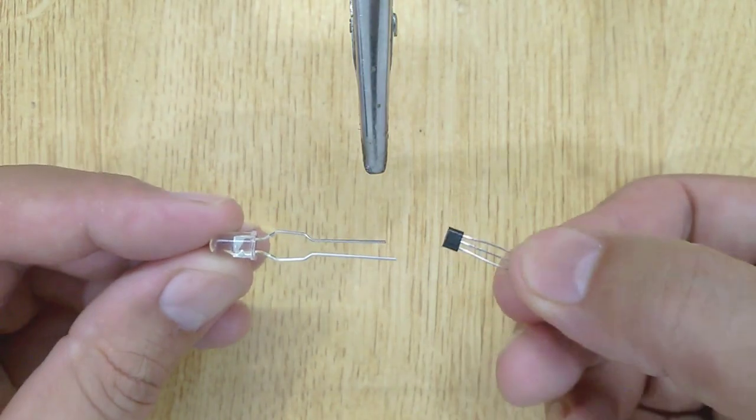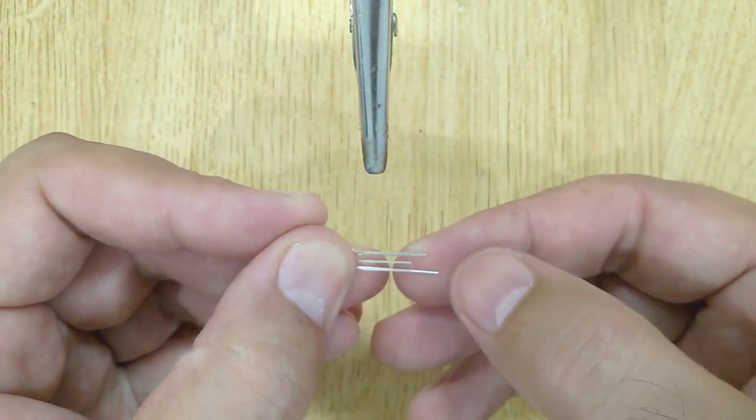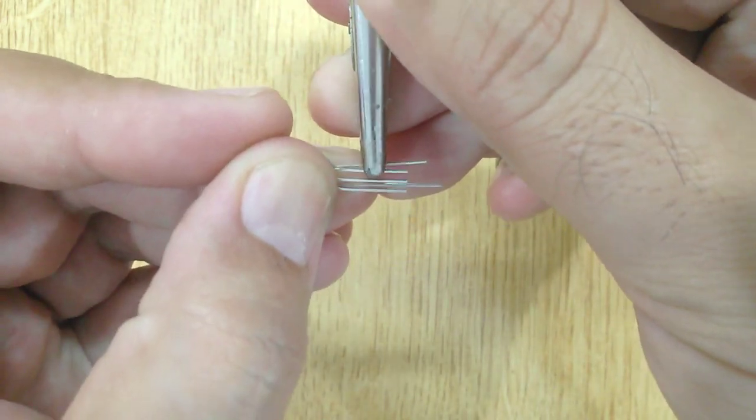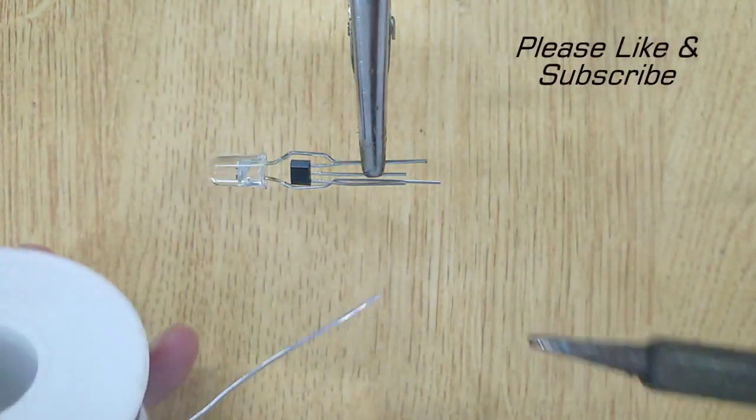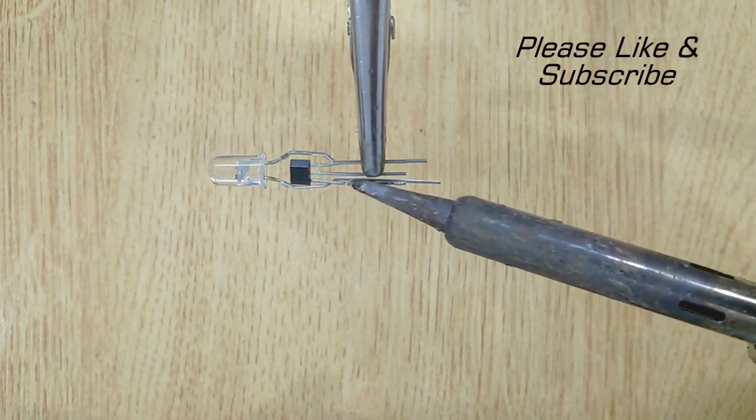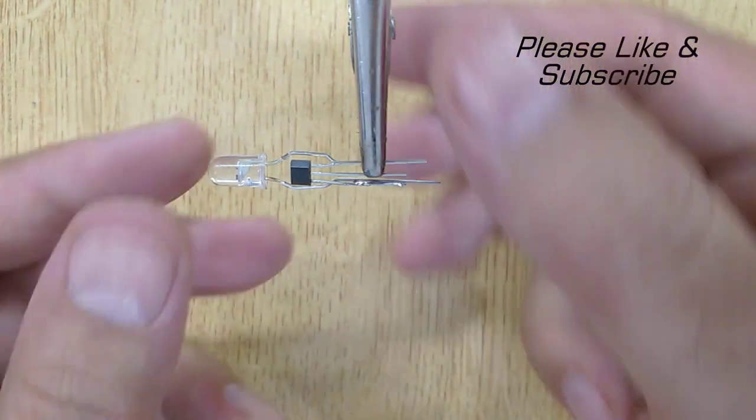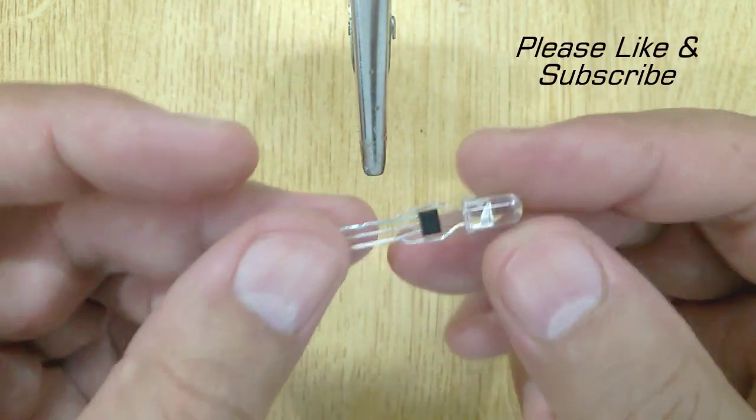Let's get started. Solder the positive pin of LED with the first pin of hall effect sensor. You can see there are three pins of hall effect sensor. Leave the second one, and solder the negative pin of LED with the third one.